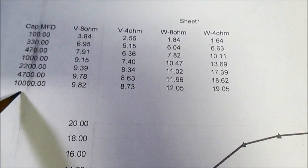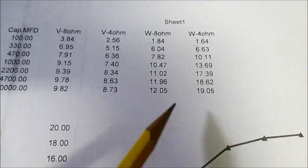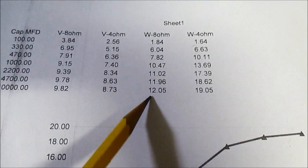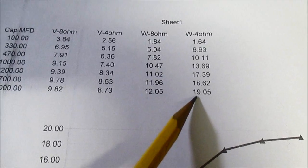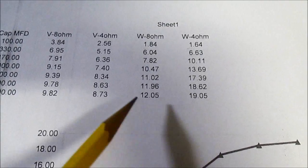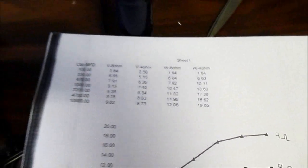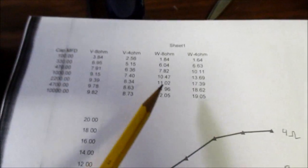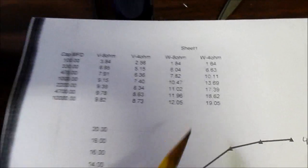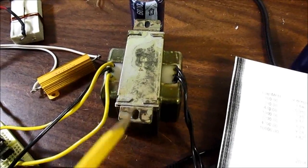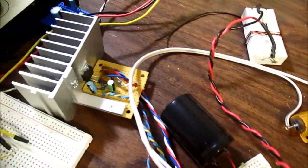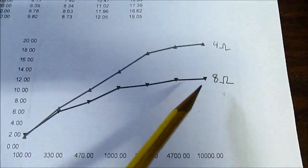All the way up to 10,000 microfarads. With 8 ohms we got 12 watts. And 4 ohms we got 19 watts. It's not double, of course. Half the impedance you should double the wattage. But you have to remember that the voltage in the transformer sags and some losses in the amplifier itself. You're not going to exactly double that.